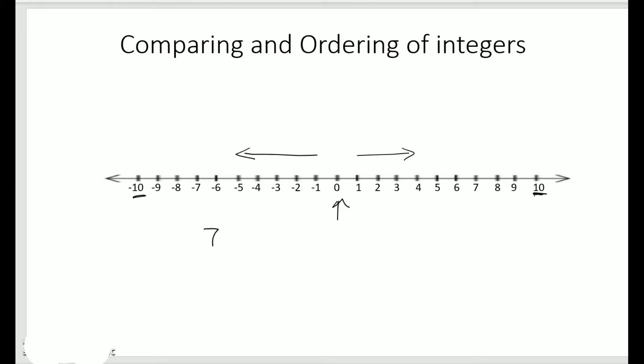Let's say I have 7 and 4, and if I want to compare these two numbers, obviously 7 is greater than 4. On the number line, 7 is to the right of 4. Let's take one more example: 4 and 0. So 4 is greater than 0, and again 4 is to the right of 0. So we see that if a number is to the right of a given number, it would be greater.